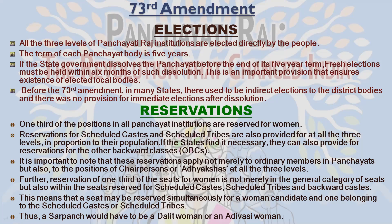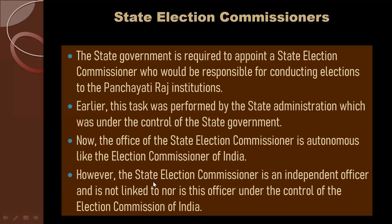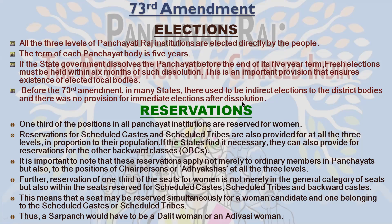Because of this kind of reservation, they have a double reservation. This was given so that these women can also achieve status and an equal level in society. It is worth noting that the 73rd Amendment not only made this mandatory reservation for ordinary members, but also made mandatory reservation of the position of panchayat chairperson at all levels in proportion to their share in the state population. That is how reservations work in the Panchayati Raj system.